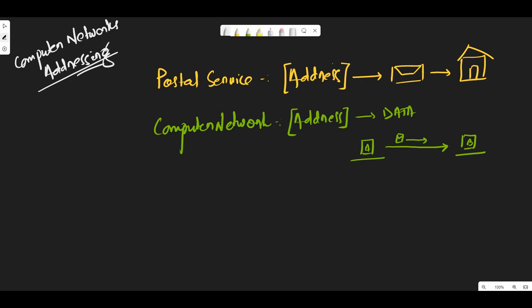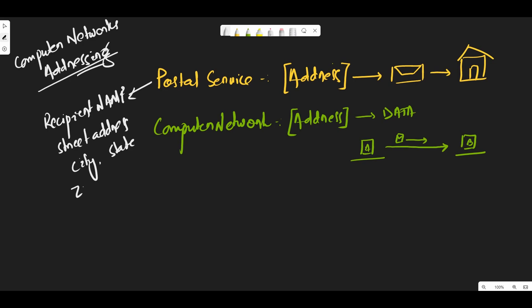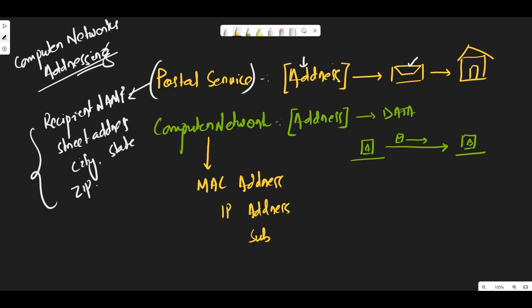When we talk about a postal service, it uses recipient name, street address, city and state with the zip code. Similarly, in terms of computer networks, we will have a MAC address, an IP address, a subnet mask, and a default gateway. These are all the addresses used in computer networks.